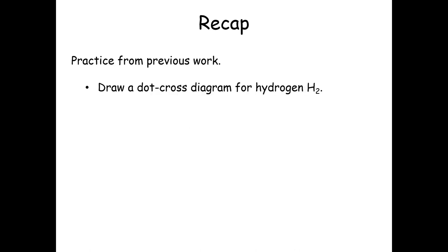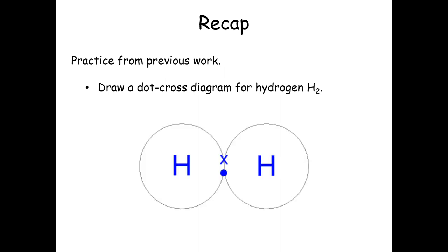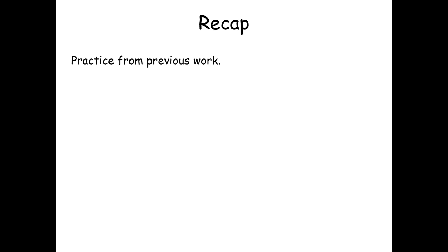Another question — draw a dot-cross diagram for a hydrogen molecule. Pause the video, have a go, then start again when you're ready. There we have it: two hydrogen atoms, each with one outer electron, shown shared forming that covalent bond — we use a dot to show one has come from one hydrogen atom and a cross to show the other. Now we need to make it a little trickier — how about drawing the dot-cross diagram for a water molecule? Have a go at that; outer electrons only for the oxygen is fine.